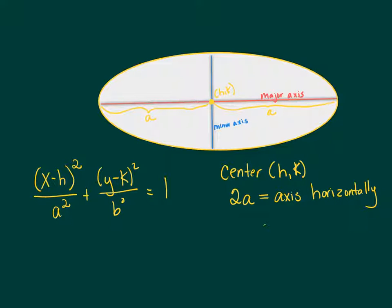To find my vertical axis, I bet you already know 2b is going to be the axis vertically. From my center up to the point on the ellipse is b and down is b, so the entire minor axis is 2b.